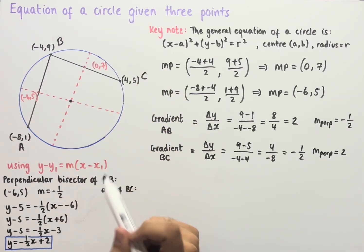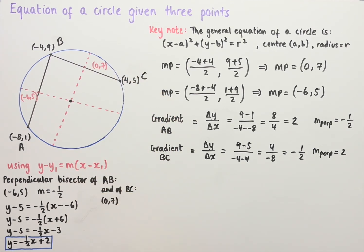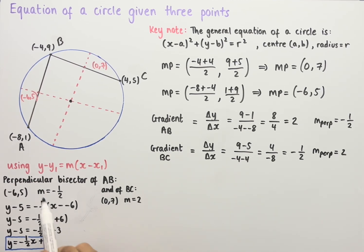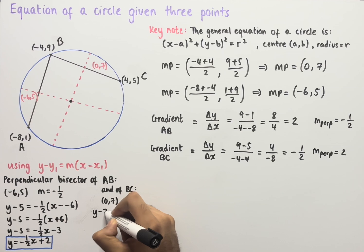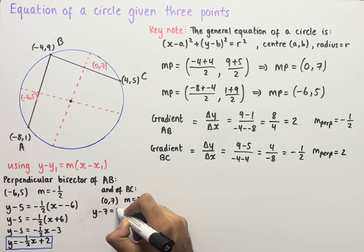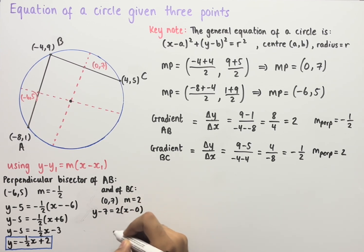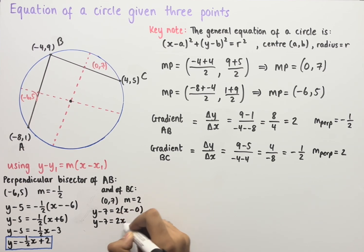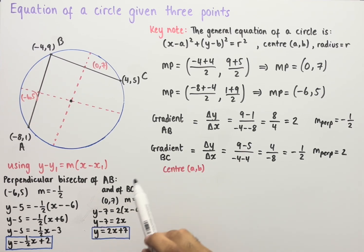For the perpendicular bisector of BC, a point on the line is (0, 7) and the gradient is 2. Using y - y₁ = m(x - x₁): y - 7 = 2(x - 0), so y - 7 = 2x. Adding seven to both sides gives y = 2x + 7.